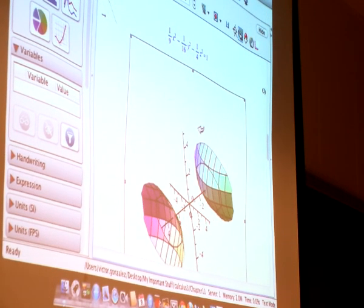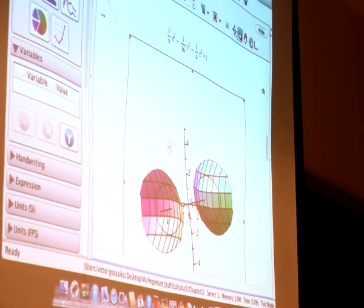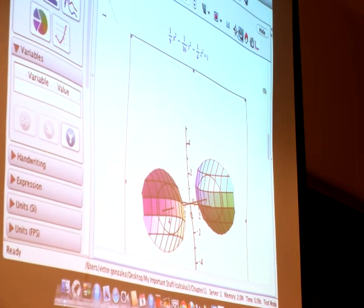This is along what axis? It's a long... I mean, it's not labeled, but it has to be along X because X is positive, right?